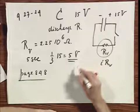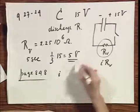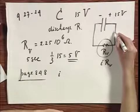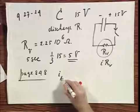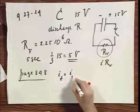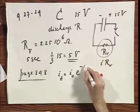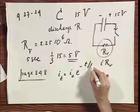And you'll find then that the current through this circuit going in this direction as a function of time equals I zero times E to the minus T divided by RC.